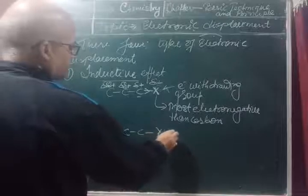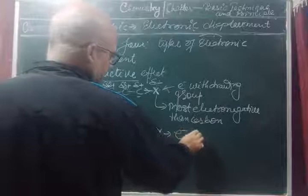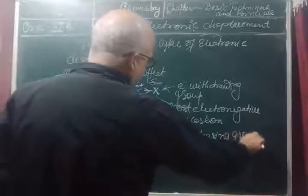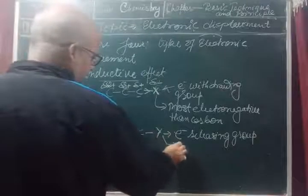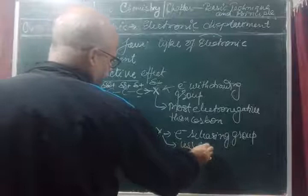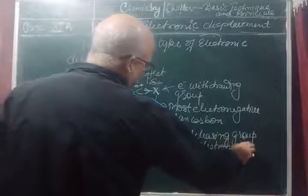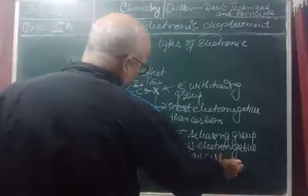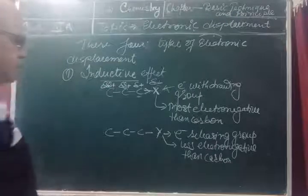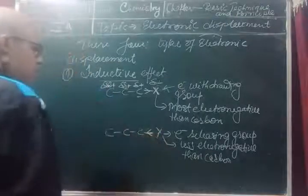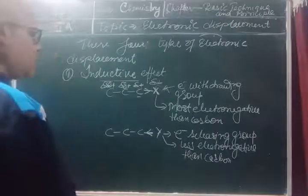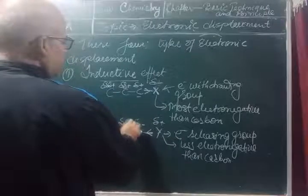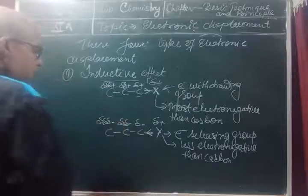Similarly, suppose here is Y, which is an electron-releasing group. This group is less electronegative than carbon. What will happen here is that the carbon chain will pull electrons toward itself. Here there will be a partial positive charge on Y, and a partial negative charge will develop on the carbon chain. As distance increases, the partial negative charge decreases.